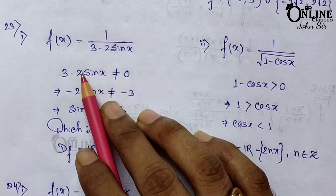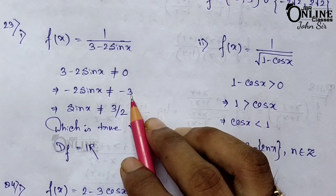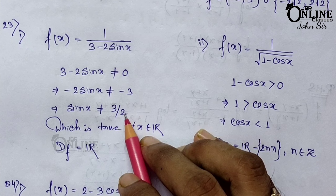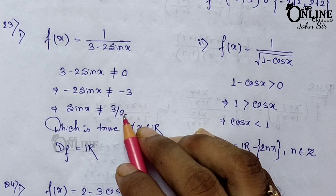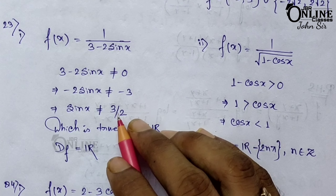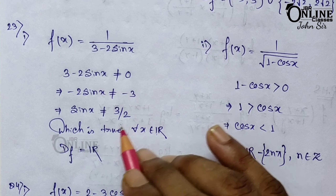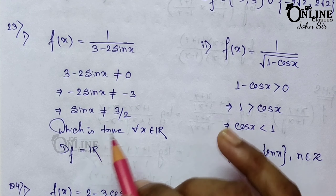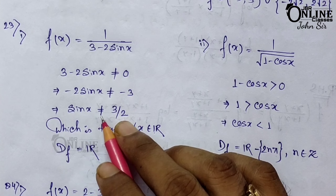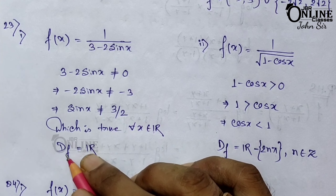Sum number 23(1): find the domain of f(x) = 1/(3 − 2sin x). The denominator must not equal zero: 3 − 2sin x ≠ 0, so sin x ≠ 3/2. Since 3/2 = 1.5 and sin x never exceeds 1, sin x ≠ 3/2 is always true for all real x. Therefore the domain is all real numbers ℝ.